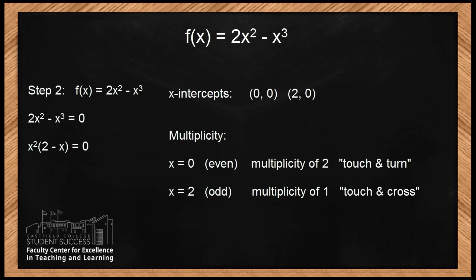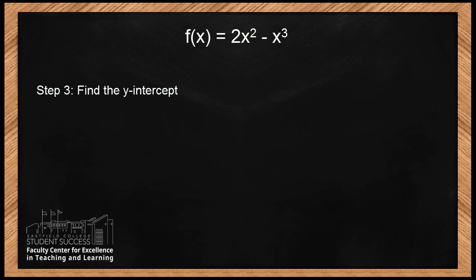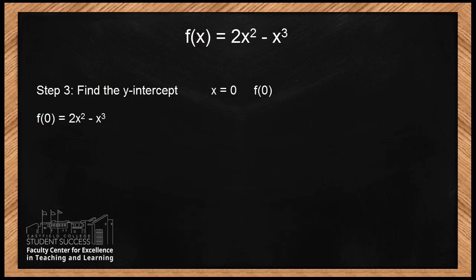Now let's look at Part C: find the y-intercept. When looking for the y-intercept, we always let x = 0, which is the same as finding f(0). Substituting 0 for every x: f(0) = 2(0)² - (0)³ = 0. This means when x is 0, y is 0 — that's the origin.